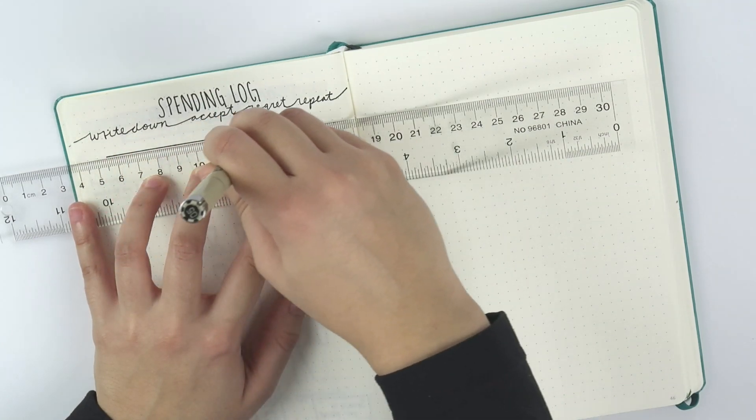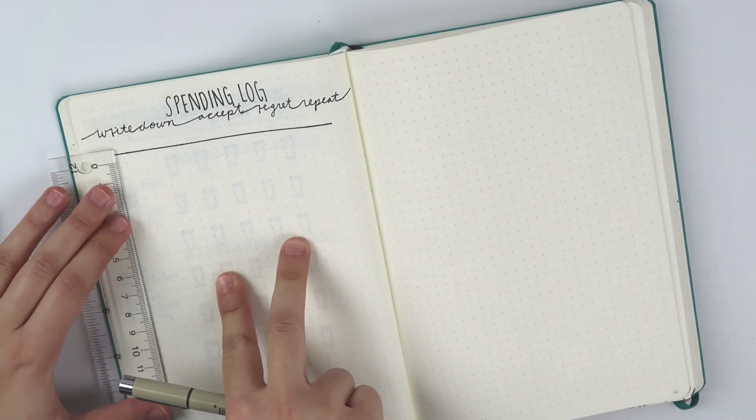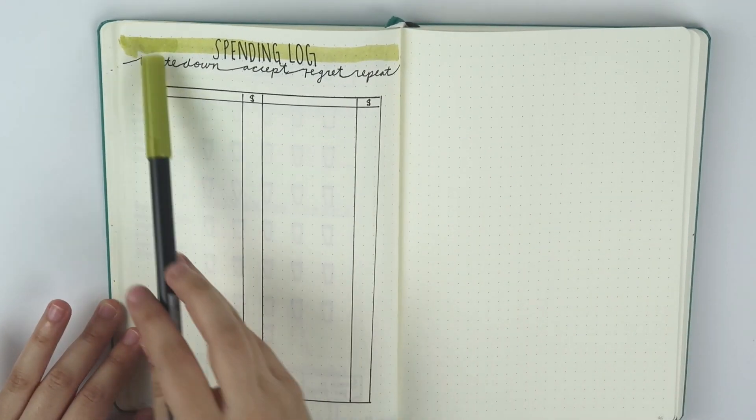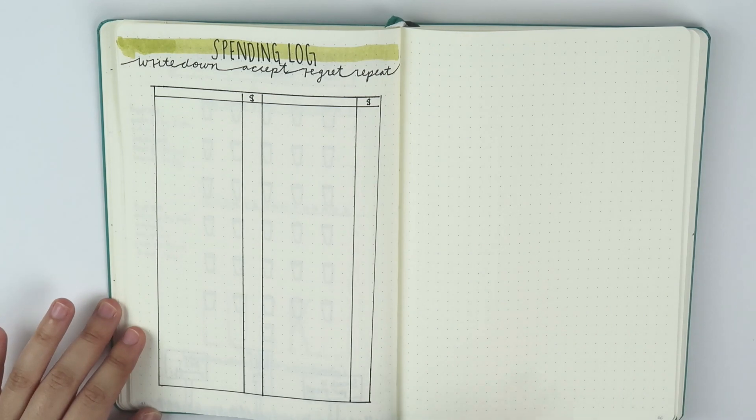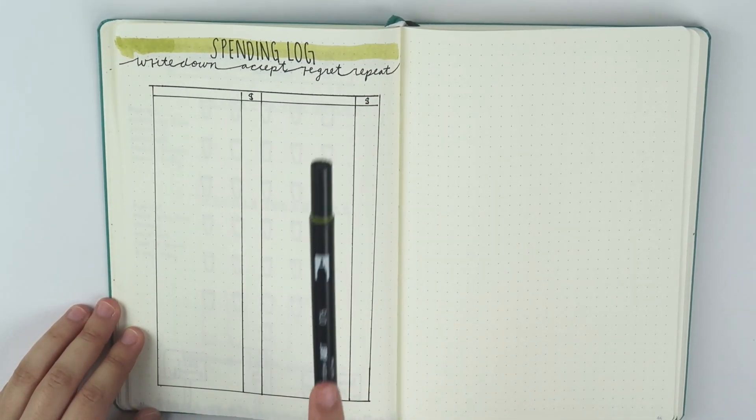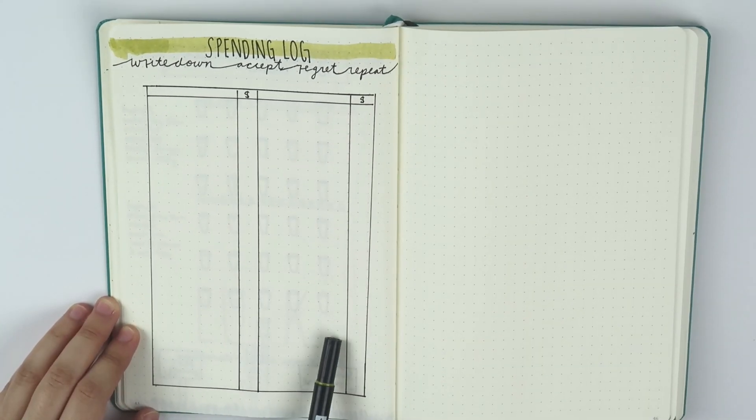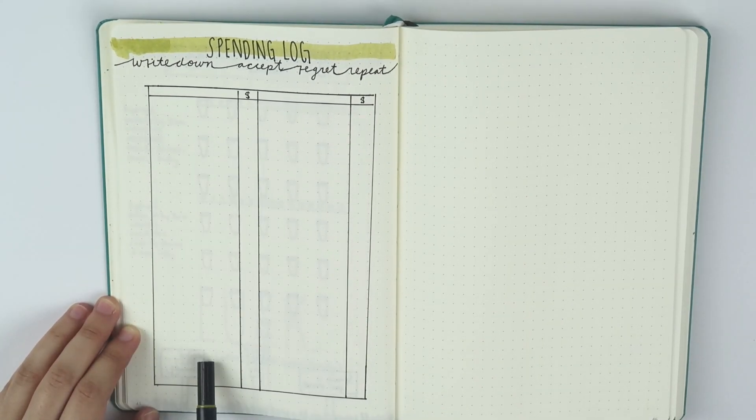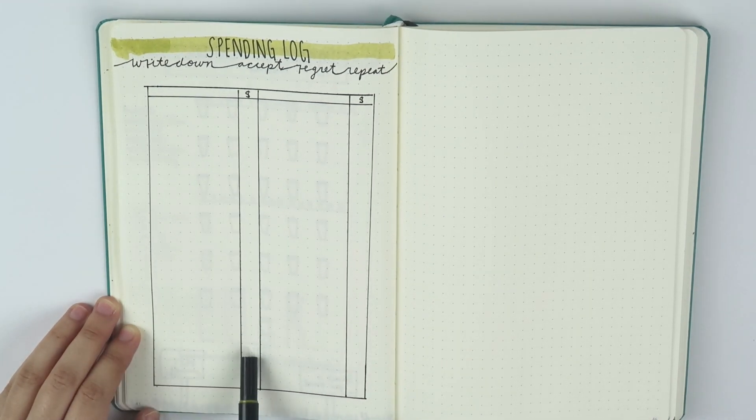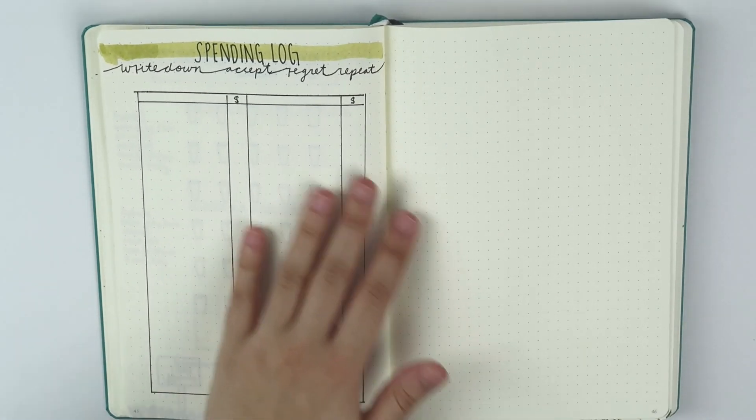My apologies if there was a severe quality drop. Both batteries for my DSLR died, so here we are filming on my vlog camera. There is my spending log, not sure what happened over here with my Tombow, but the process for this spending log is pretty simple. You write it down, you accept the purchase, you regret the purchase, and then you repeat the process. I did two columns to keep it simple, so here I'll write what the item is and in the column to the right I'll write the amount that it costs. Very scary page. I never end up liking this page at the end of the month.